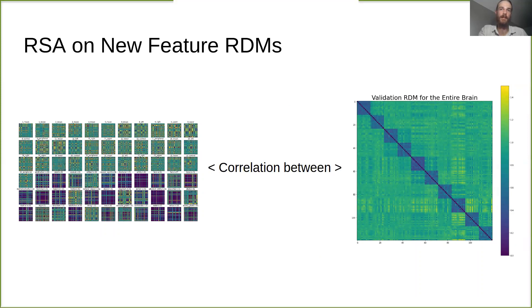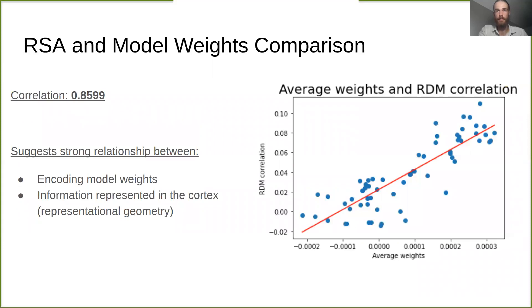As demonstrated by the correlation of 0.86 between the RSA-derived metrics and the average encoding model weights for these features, encoding model weights indeed seemed to be a clear reflection of the representational geometry of the brain.